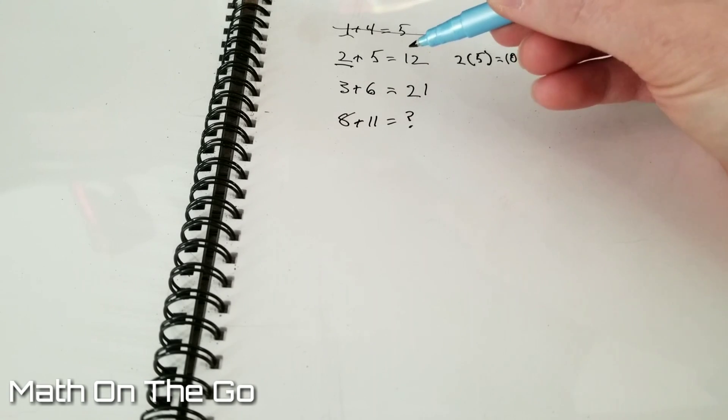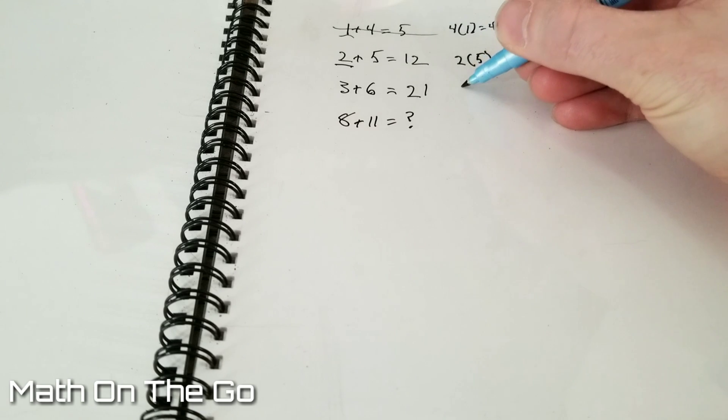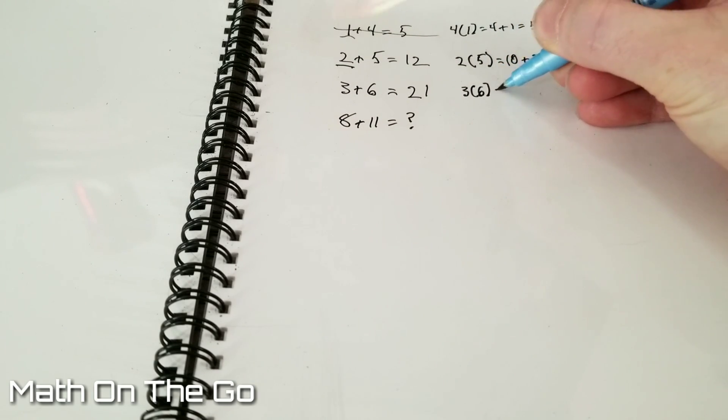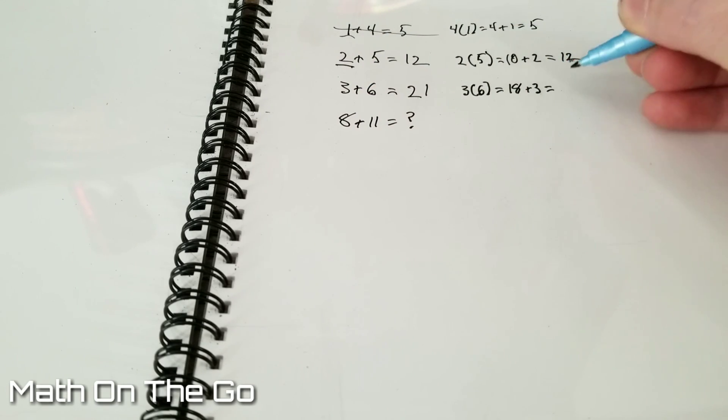Now, we'll go through and we'll do 3 plus 6 equals 21. So it's 3 times 6 equals 18, plus the first digit, which is 3, equals 21.